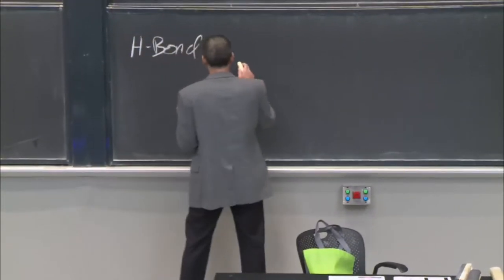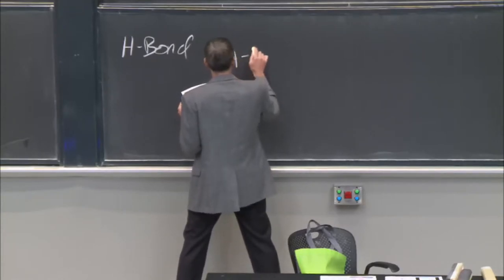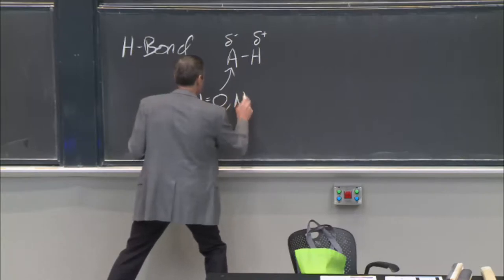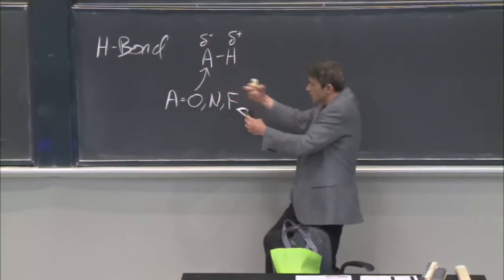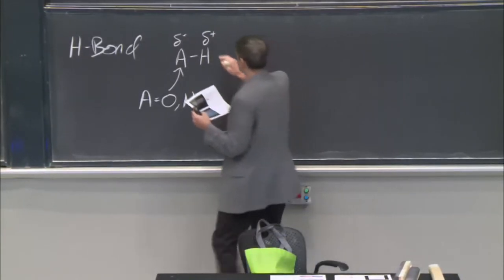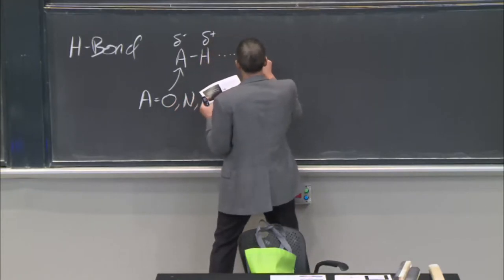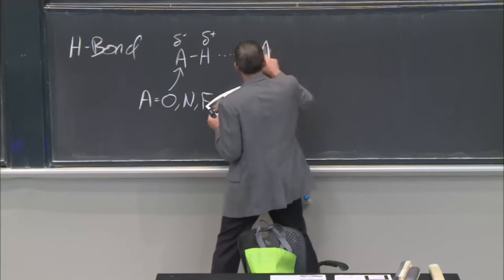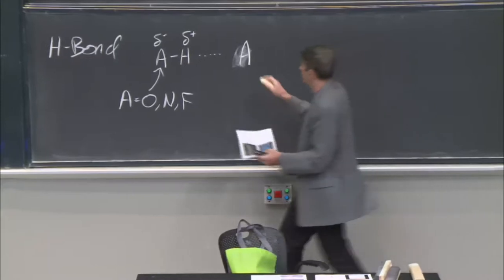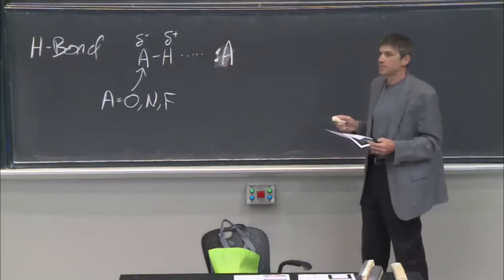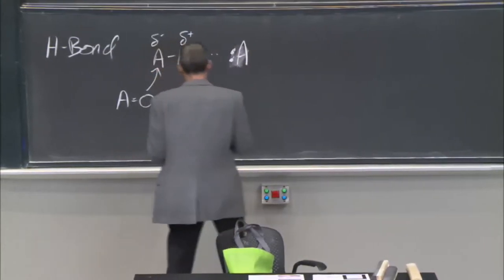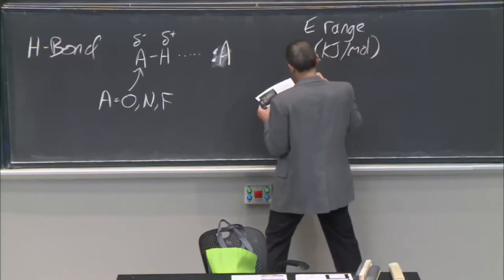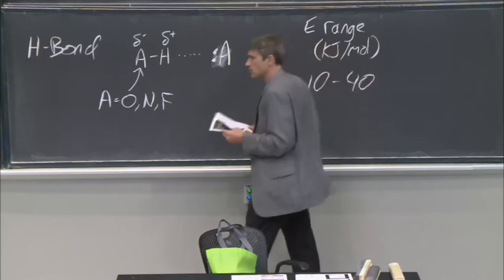The model for hydrogen bonding involves a highly electronegative atom — oxygen, nitrogen, or fluorine — that draws a lot of charge off of hydrogen, leaving it with a really strong delta plus, so it can then bond to a lone pair on another atom. The range of attraction is something like 10 to 40 kilojoules per mole of bonds, so it's pretty strong compared to London dispersion.